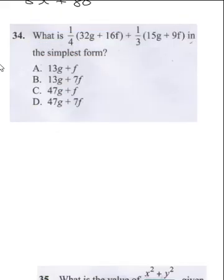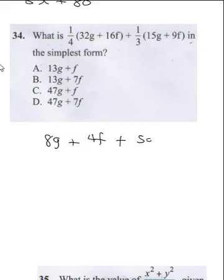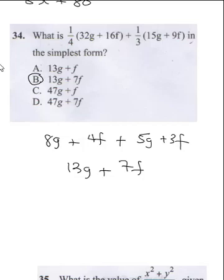The next question asks for the simplest form of an expression. Opening the brackets: 1 over 4 times 32g is 8g, plus 1 over 4 times 16f is 4f, plus 1 over 3 times 15g is 5g, plus 9f divided by 3 is 3f. Collecting like terms: 8g plus 5g is 13g, and 4f plus 3f is 7f. Correct answer is B.